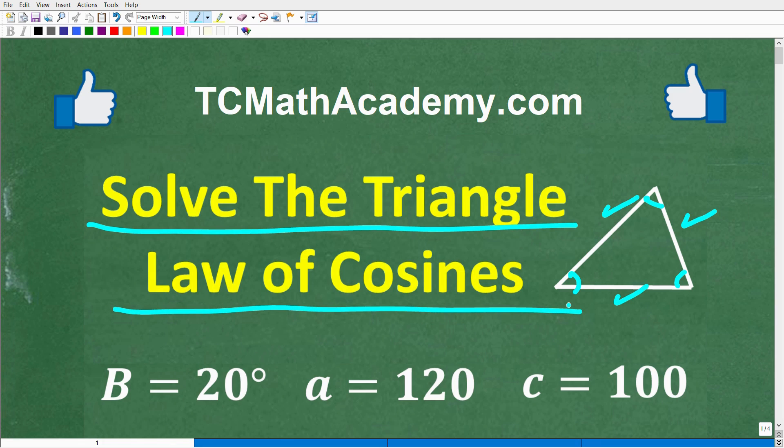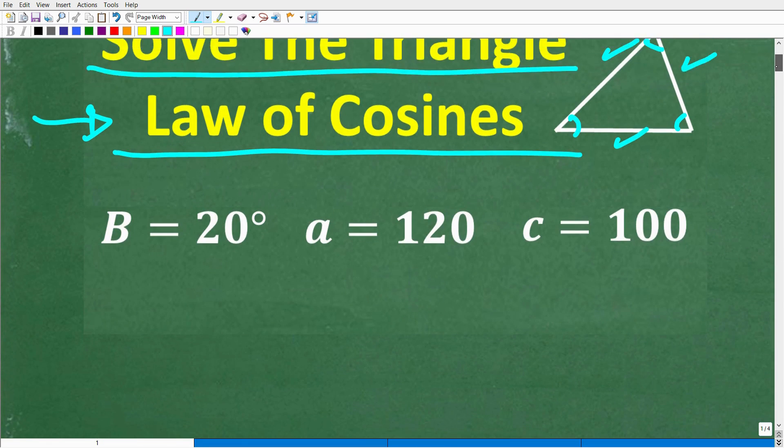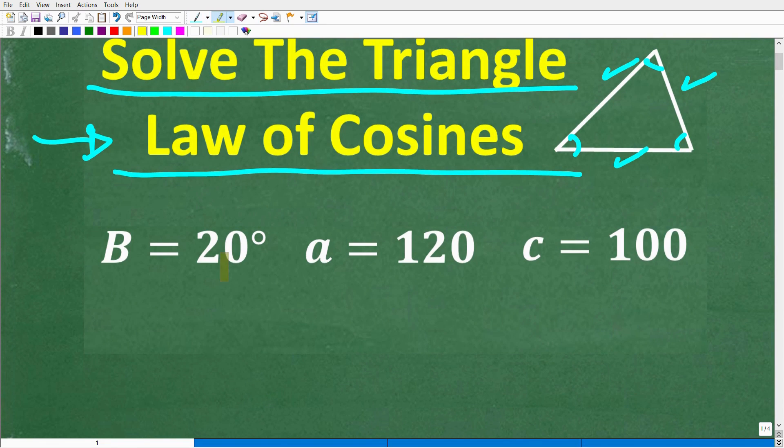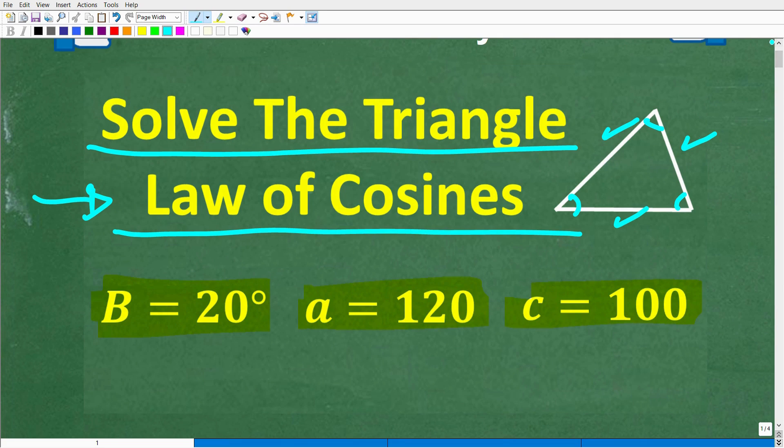What I have for you here is an example problem where we're going to be using the law of cosines. We have a triangle where angle B is 20 degrees, length a is 120, and length c is 100. So you need to construct a triangle and figure out where angle A, B, and C is and where these lengths are. Then you got to find all the angles and sides of that triangle. This is not that easy.